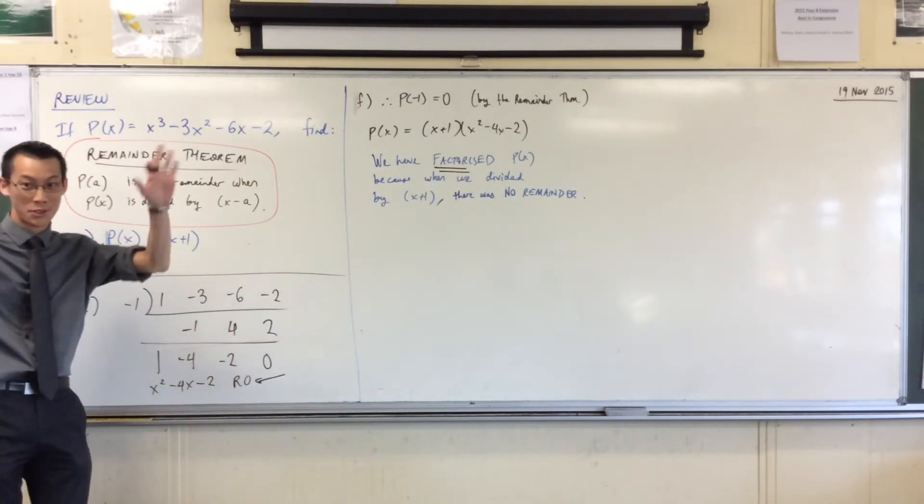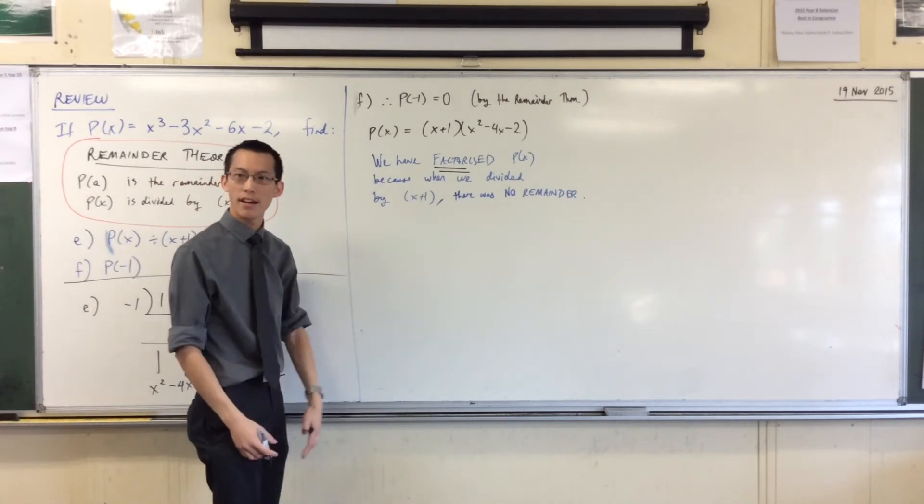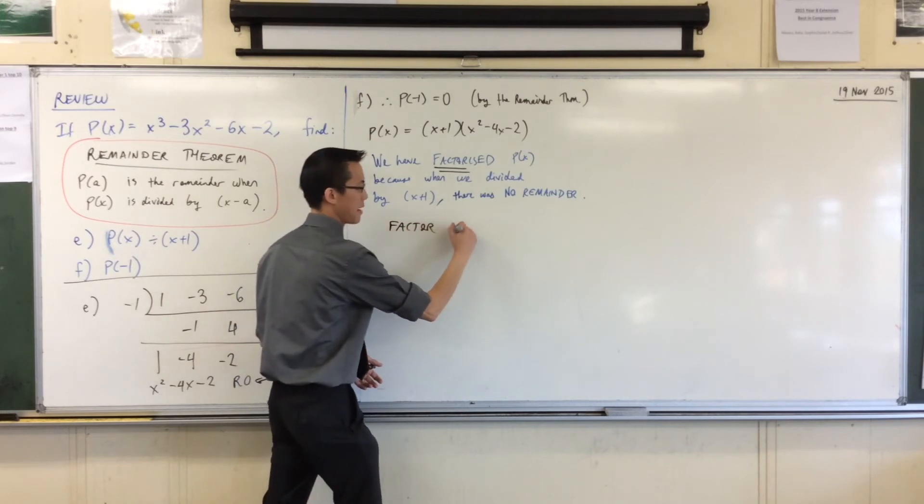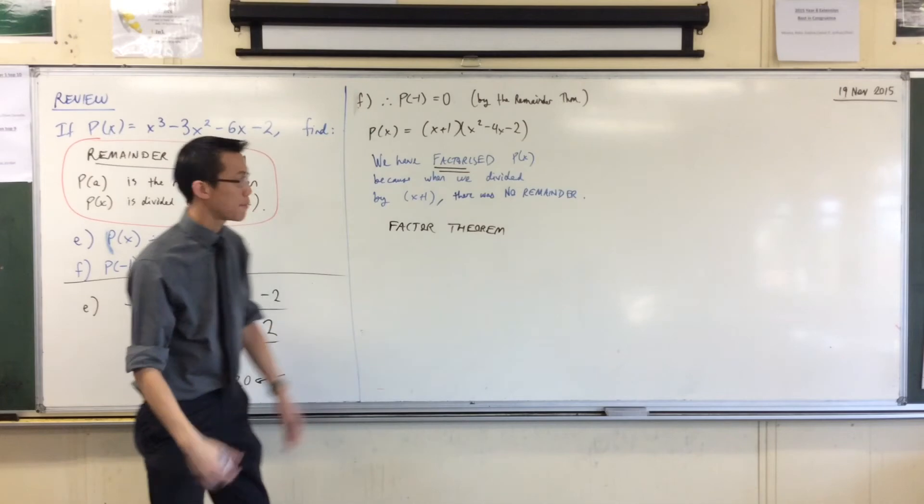When you divide like 50 by 10, the reason there's no remainder is because 10 is a factor of 50. So when we divide by x plus 1 there was no remainder. So being that what we've found is a case where there isn't a remainder, this special case is no longer called the remainder theorem. It's not about remainders anymore. It's about factors.